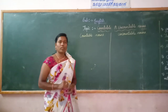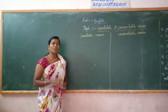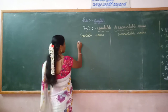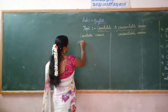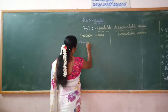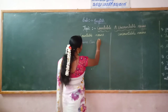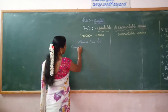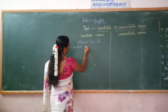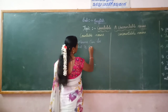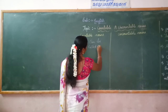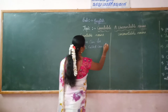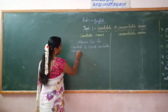Countable and Uncountable Noun. It is the last type of the noun. Countable means the noun can be counted. Nouns that can be counted are called Countable Nouns. Here are some examples of Countable Nouns.